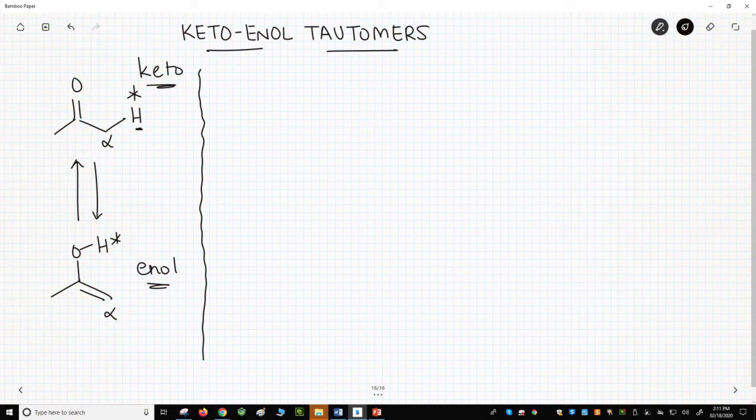These two tautomers exist in equilibrium. For a simple carbonyl compound like this molecule, which is acetone, the equilibrium strongly favors the keto form.